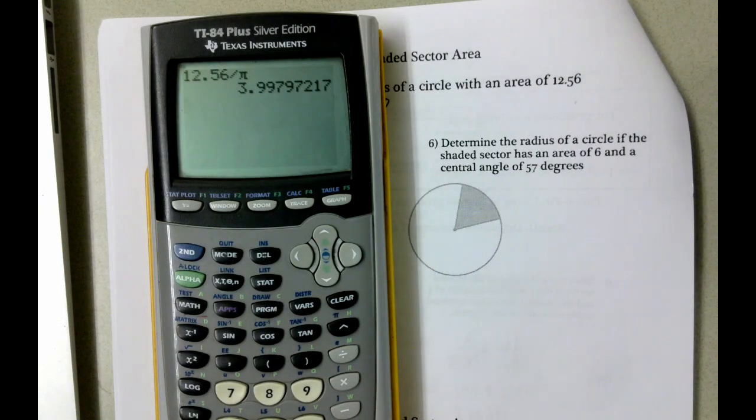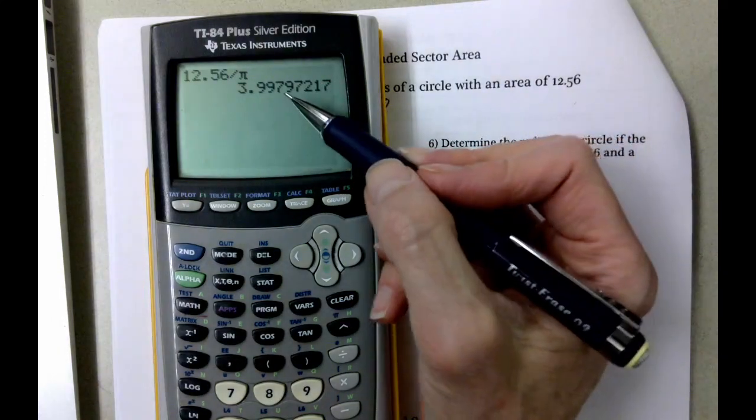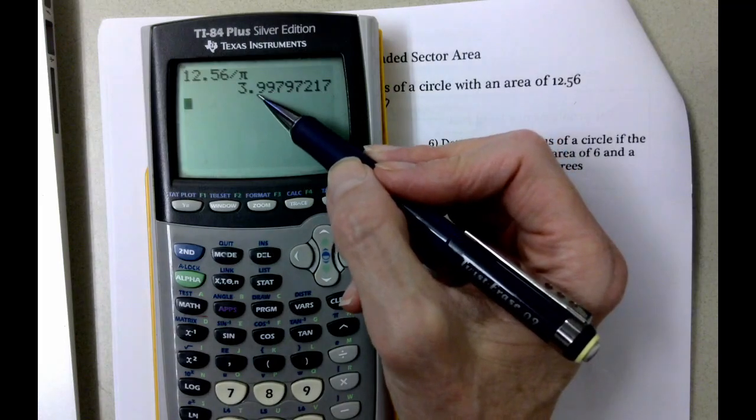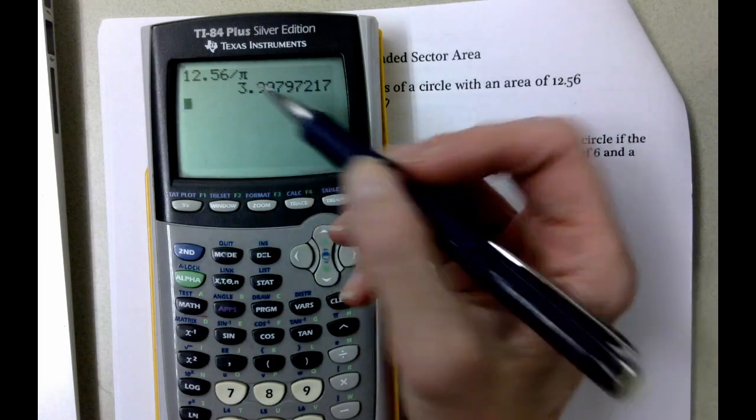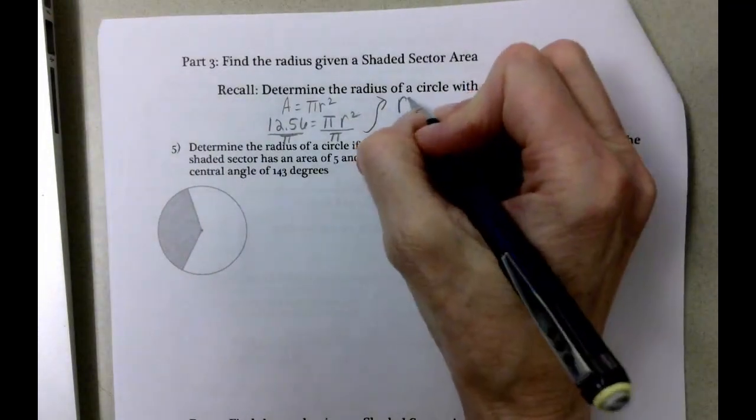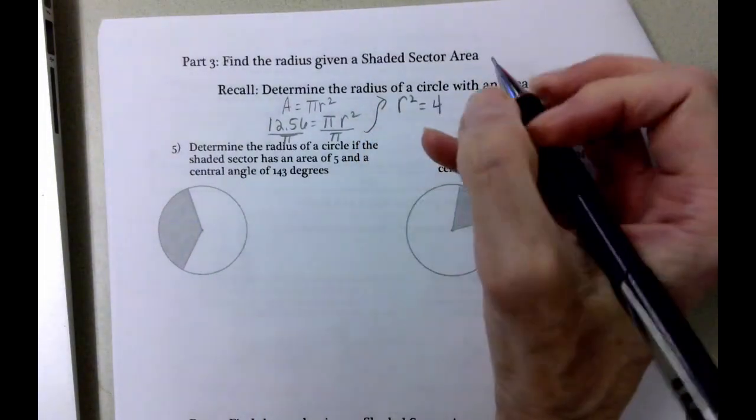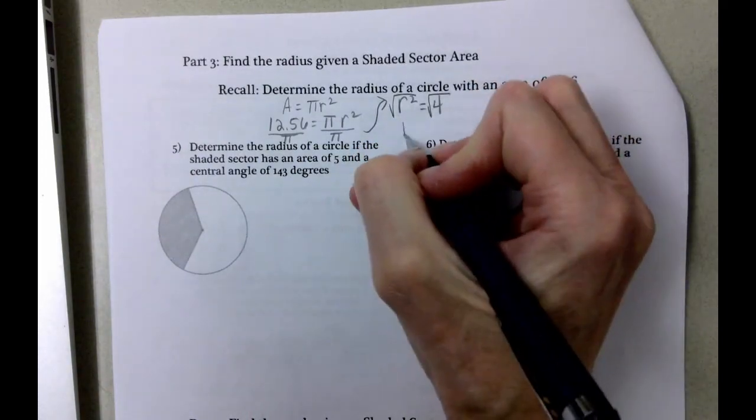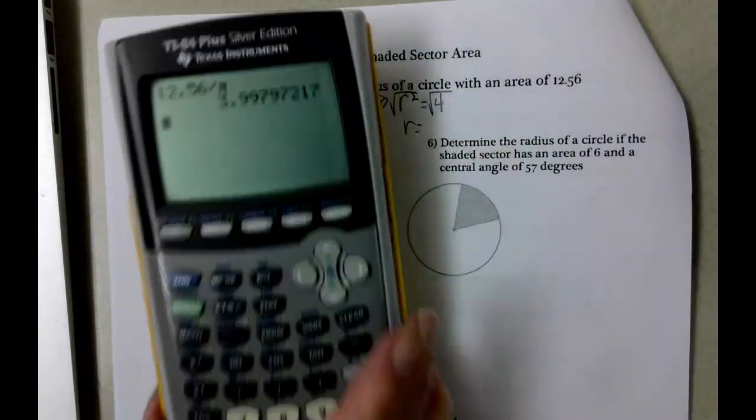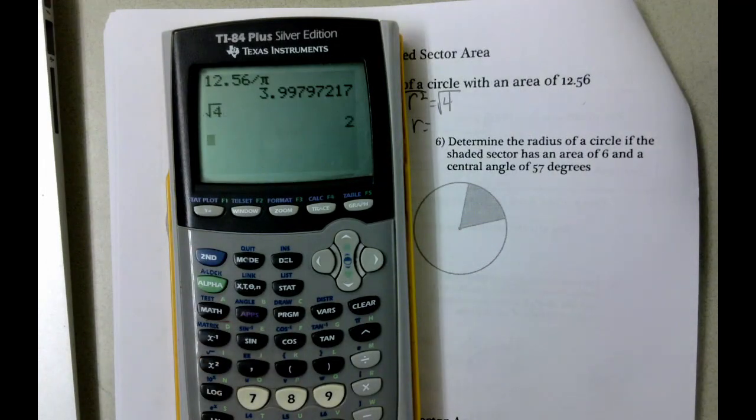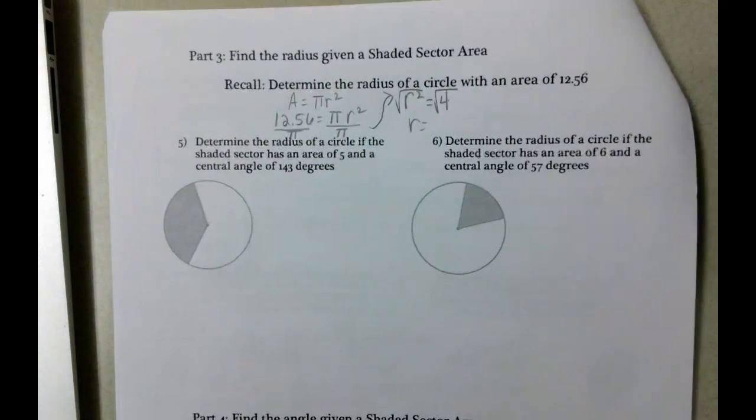And we end up with 3.997. The 7 is going to round that 9 to a 0, which rounds it to 4. So we end up with radius squared equals 4. Then we take the square root of both sides, and the square root of 4 is 2, so our radius is 2.